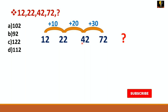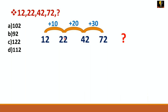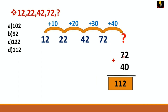So you can easily see: from 12 to 22 is plus 10, from 22 to 42 is plus 20, and 42 plus 30 equals 72. So the next number will be 72 plus 40, which equals 112. The right answer is 112.